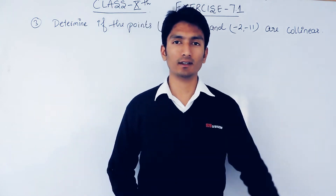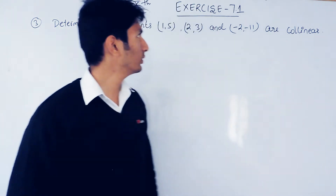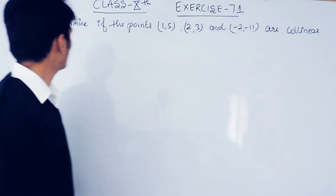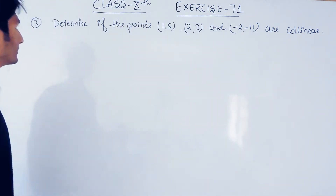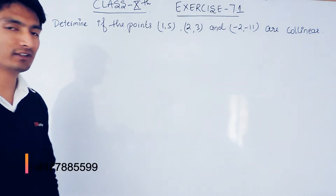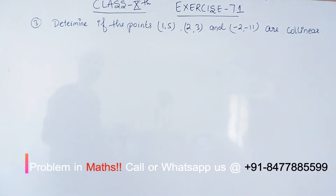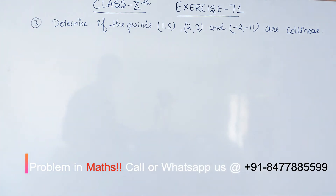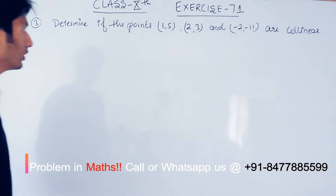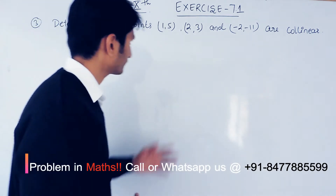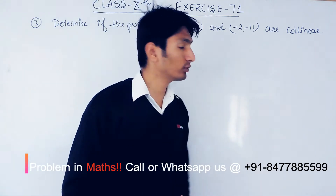Hello everyone. In this video we are going to solve question number 3, Exercise 7.1. The question says: determine if the points (1,5), (2,3), and (-2,-11) are collinear or not.